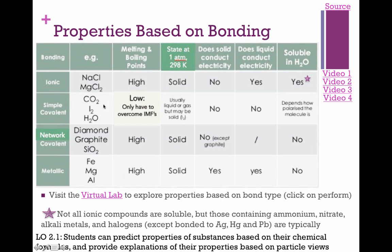Simple covalent compounds are just your normal covalent compounds — all non-metals: CO2, I2, H2O, nitrogen gas. Network covalent is really just two examples: SiO2 and elemental carbon — carbon can be diamond or graphite. The difference with network covalent is that you have a lattice of covalent bonds all held together, which is what makes diamond so strong.